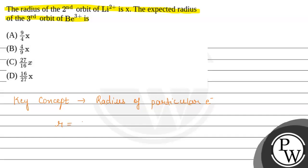0.529 multiplied by n² divided by z angstrom. Here n is the number of the atomic orbital and z represents the atomic number. According to the given question,